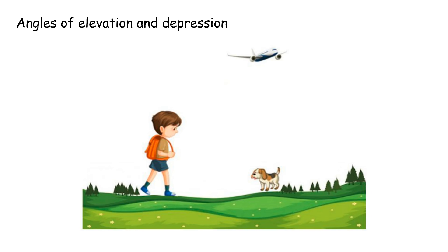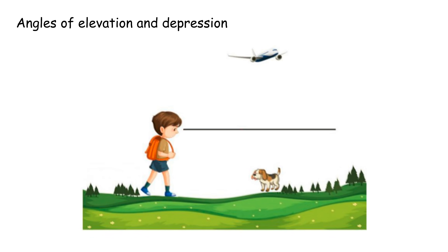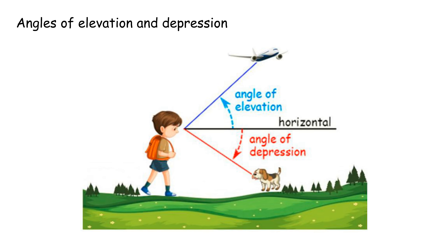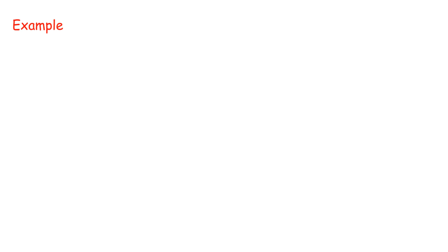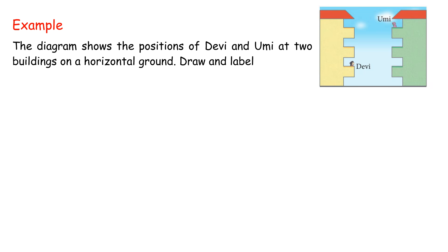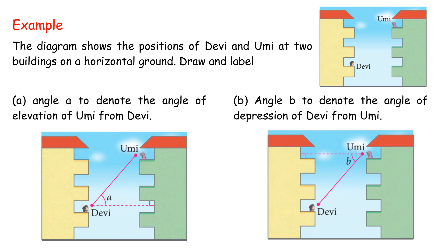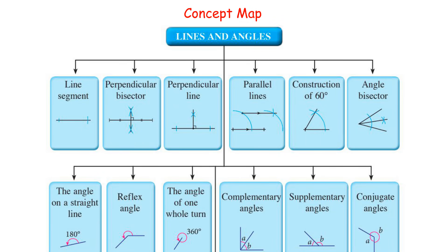Determine the values of angles related to parallel lines and transversals. In the diagram, PQ, RS, and TU are parallel lines. Find the values of a, b, and c. Solution: a equals 60 degrees, b equals 118 degrees. b plus c equals 180 degrees; 118 degrees plus c equals 180 degrees; c equals 62 degrees. Angles of elevation and depression: the angle of elevation is the angle between the horizontal line and the line of sight above the horizontal line, formed when an observer looks upwards. The angle of depression is the angle between the horizontal line and the line of sight below the horizontal, formed when an observer looks downwards. Example: the diagram shows the positions of Devi and Umi at two buildings. Draw and label angle A to denote the angle of elevation of Umi from Devi, and angle B to denote the angle of depression of Devi from Umi. The concept map for Form 1 Chapter 8 is as below.